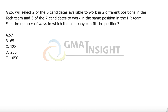A company will select two of the six candidates available to work in two different positions in the tech team, and three of the seven candidates to work in the same position in the HR team. Find the number of ways in which the company can fill the positions. Here it's simply about the selection of candidates — there is no arrangement in the second case, because the positions are identical, while in the first case they are two different positions.